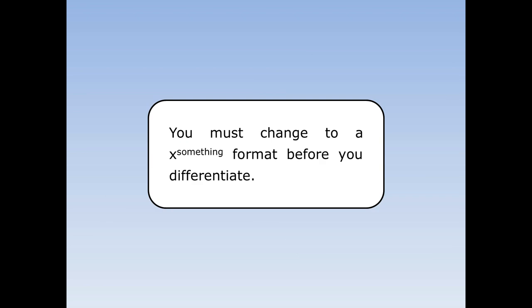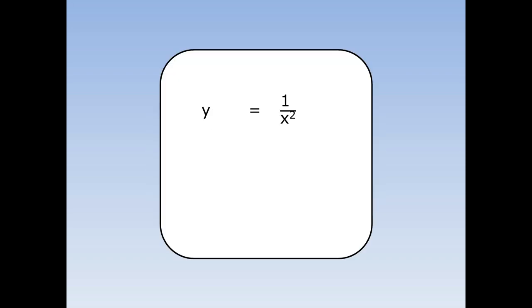Sometimes they won't give it in such an easy format. You must change to an x to the something format before you differentiate. Y equals 1 over x squared — I can't differentiate it, I need to change it into y equals x to the minus 2, and now I can differentiate it.